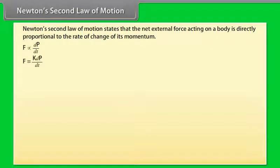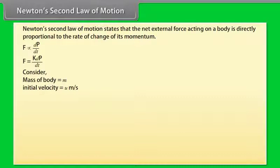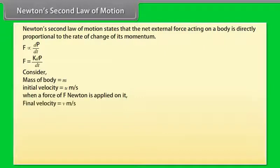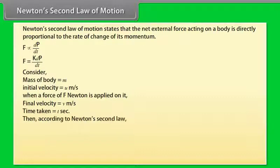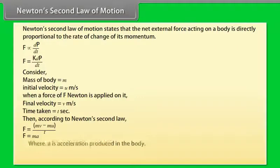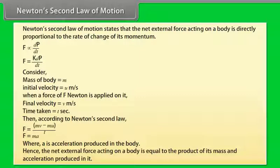Consider a body of mass M initially moving with a velocity of U meter per second. When a force of F Newton is applied on it, its velocity becomes V meter per second after a time of T seconds. Then according to Newton's second law, F is equal to MV minus MU divided by T, which equals MA, where A is the acceleration produced in the body. Hence, the net external force acting on a body is equal to the product of its mass and acceleration produced in it.